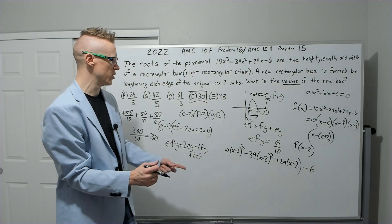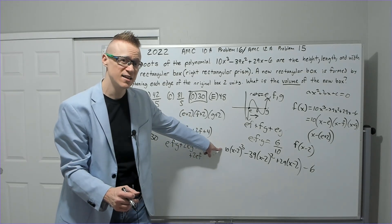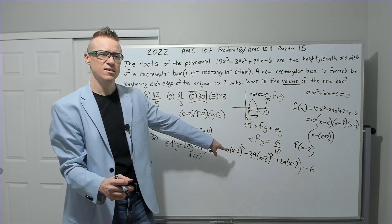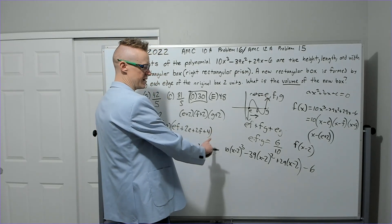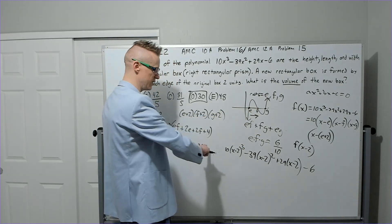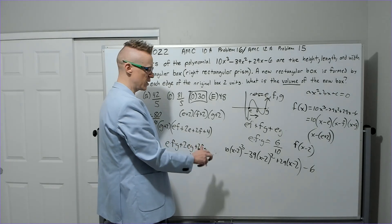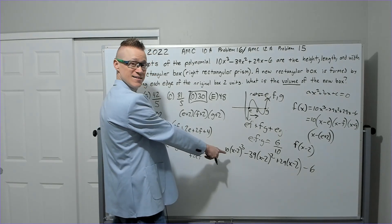Now don't forget what we're looking for. We're looking for the product of these roots, okay? So the product of these roots is going to be the negative constant over leading coefficient.